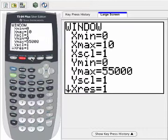So I'd like to reset my window to be kind of the default, which is negative 10 to 10 in the X direction, negative 10 to 10 in the Y direction.